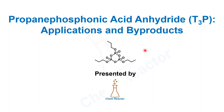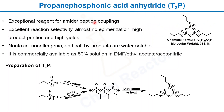Welcome back to Chem Reactor. In today's video we are going to discuss a very important reagent in organic synthesis: propanephosphonic acid anhydride, in short we call it T3P. We will cover its applications and byproducts. T3P is an exceptional reagent for amide or peptide coupling reactions with excellent reaction selectivity, almost no epimerization, high product purities, and high yields.